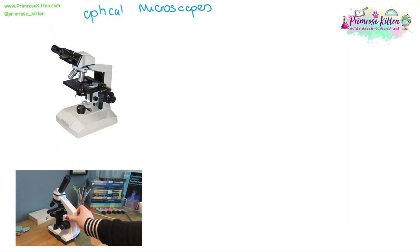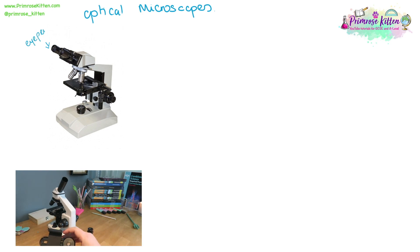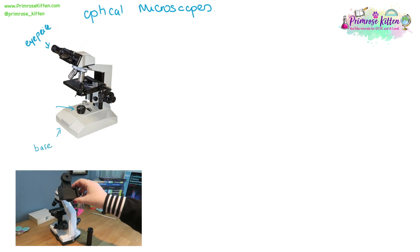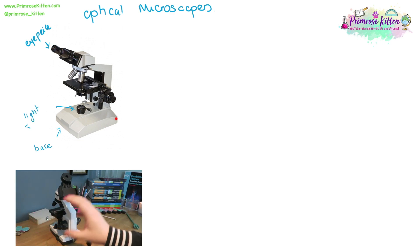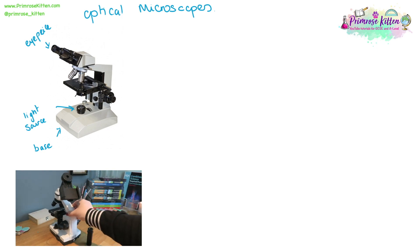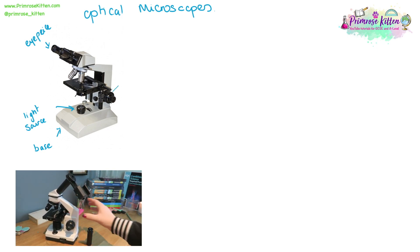It is important that you are familiar with the different parts of an optical microscope. Hopefully you've used one of these in the lab at school or seen somebody use one. We have the eyepiece, the base, and this is going to be the light source down here. This could be a mirror or it could be a lamp if it's an electrical microscope.